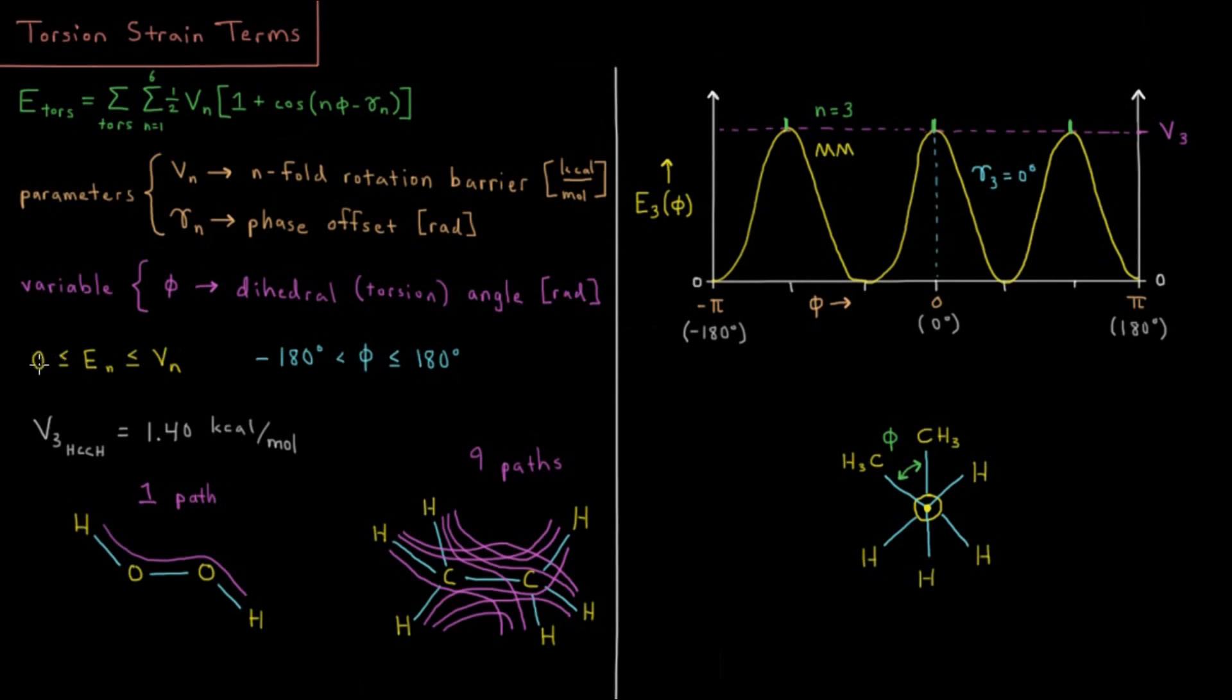So we have the energy there can go from a minimum of zero up to a maximum of our barrier height for that N fold. So V three would be the maximum height of this three fold term here. And then our variable again can go from negative 180 to positive 180.